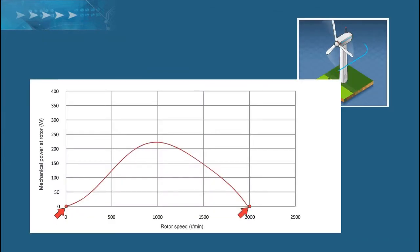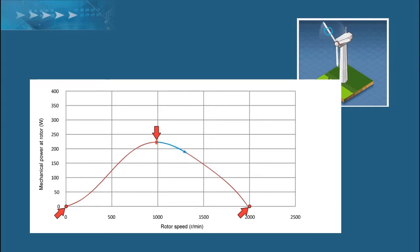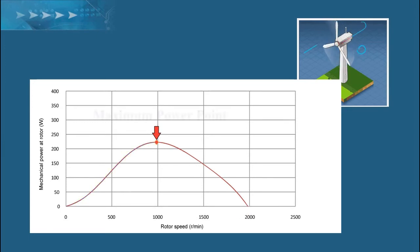Power is only available when there is both torque and speed, and the available power follows a bell-like curve. The maximum power for this wind speed would be at this blade's speed. If the blades go faster, there will be less torque, and torque times speed equals less power. If the blades go more slowly, there is more torque but less speed, so there is less power in this case as well.